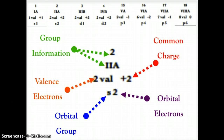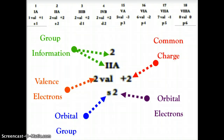Across the top of the periodic table there are rows of information including numbers, Roman numerals, and other data. The top two rows show the column number and the group information — for example, column 2, group 2A. As you go across the periodic table you have 18 columns and 18 different groups.